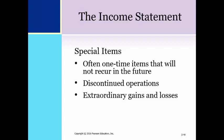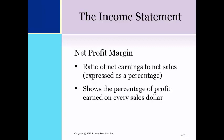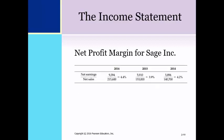Extraordinary gains and losses are items that meet two criteria: unusual in nature and not expected to recur in the foreseeable future. Net earnings represent the firm's profit or loss after consideration of all revenue and expense reported during the accounting period. The net profit margin shows the percentage of profit earned on every sales dollar; it is a ratio expressed as a percentage of net earnings to net sales. This is an illustration of the calculation of the net profit margin for Sage Inc. for the years 2014 through 2016.